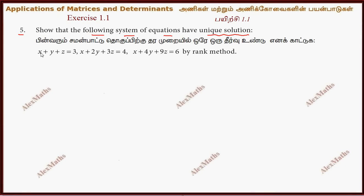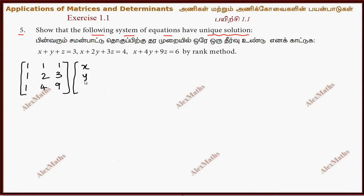Because in the equations, the coefficients form the coefficient matrix. So, the first equation has coefficients 1, 1, 1; the second is 1, 2, 3; and the third is 1, 4, 9. This multiplied by x, y gives the constants 3, 4, and 6.